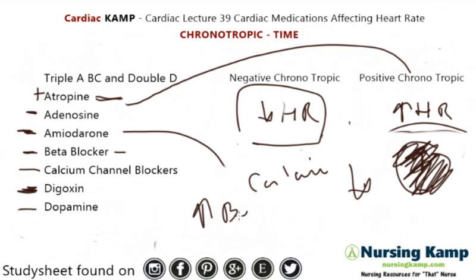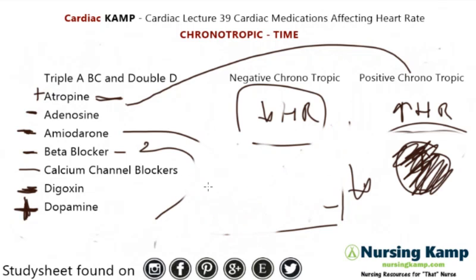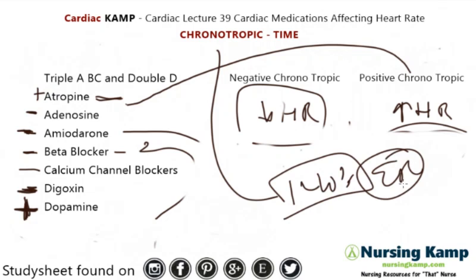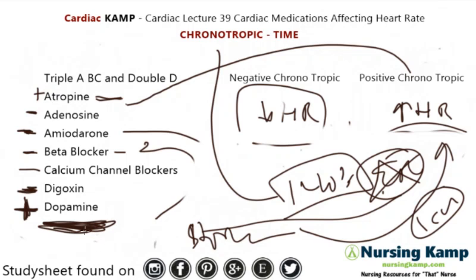Finally, dopamine increases heart rate because it's a beta agonist — making it a positive chronotropic. We talked about how beta blockers slow down the heart rate, so dopamine does the opposite. When you put a patient on a dopamine drip, the heart rate can increase significantly — sometimes to the 140s. That can be very scary for new nurses, and in the ER doctors may stop it because the elevated heart rate is too risky before moving the patient to the ICU.